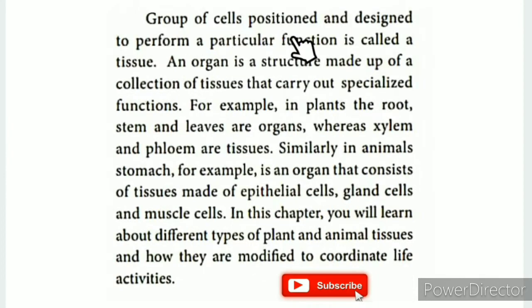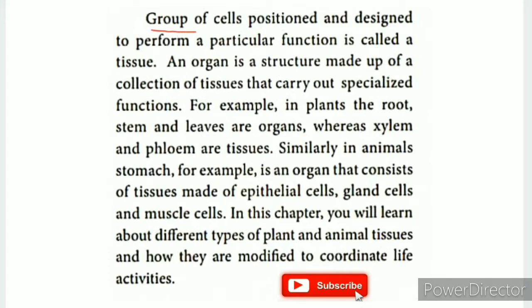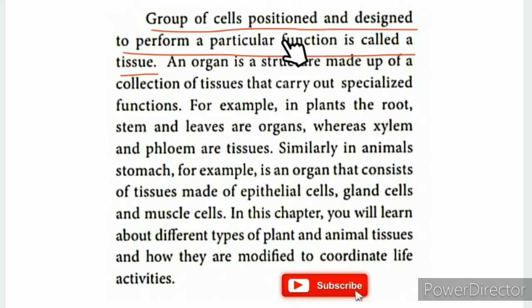A group of cells positioned and designed to perform a particular function is called a tissue. The key aspects of this definition are: one position, a specific function, and a specific design.